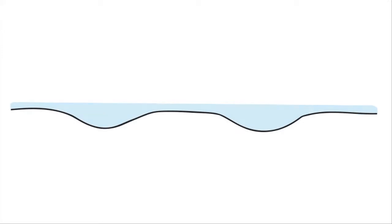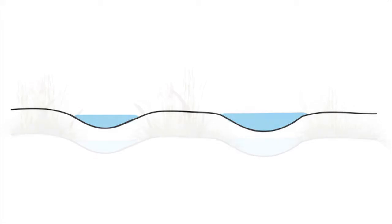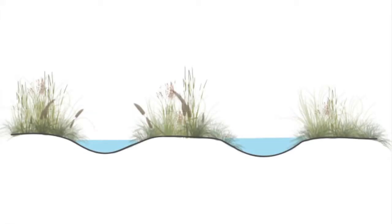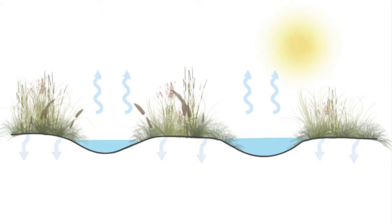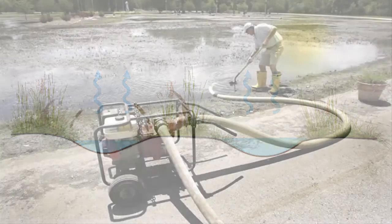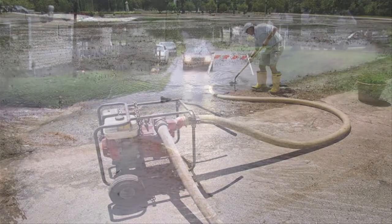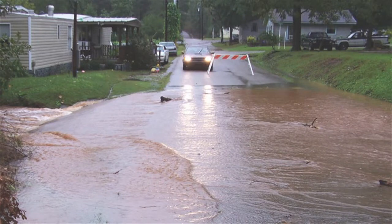In some flat areas, runoff collects in depressions and cannot drain out, creating a ponding effect. Ponding flood waters do not move or flow away. Flood waters will remain in the temporary ponds until they infiltrate into the soil, evaporate, or are pumped out. Ponding is common in areas where man-made features have blocked natural surface runoff outlets.